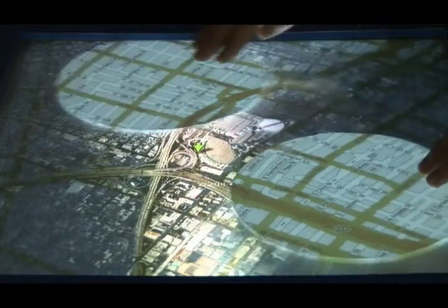In this application, initially you can see an aerial photograph on the tabletop. When you hold paper screens over the table, the map information of the covered area is superimposed.